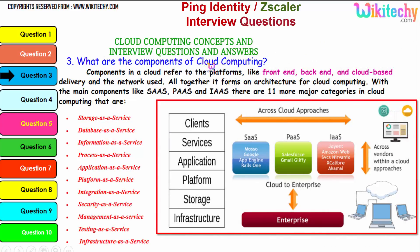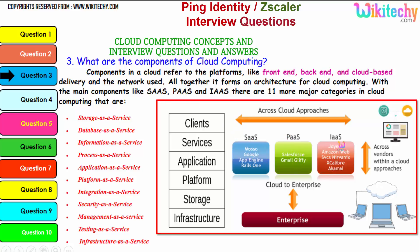Let's talk about the components of cloud computing. Components in a cloud refer to platforms like front-end, back-end, cloud-based delivery, and the network used. All together they form the architecture for cloud computing, with the main components being Software as a Service, Platform as a Service, and Infrastructure as a Service.